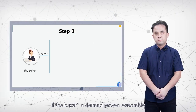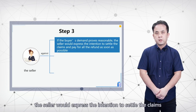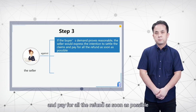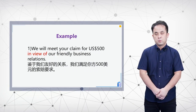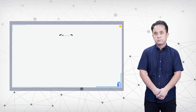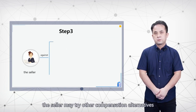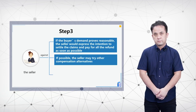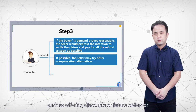If the buyer's demand proves reasonable, the seller would express the intention to settle the claim and pay the refund as soon as possible. For example: 'We will meet your claim for US$500 in view of our friendly business relations.' Or: 'Enclosed is a check for US$394 as compensation, which will cover your whole loss.' If possible, the seller may try alternative compensation such as offering discounts on future orders or allowing the customer to try a new model.